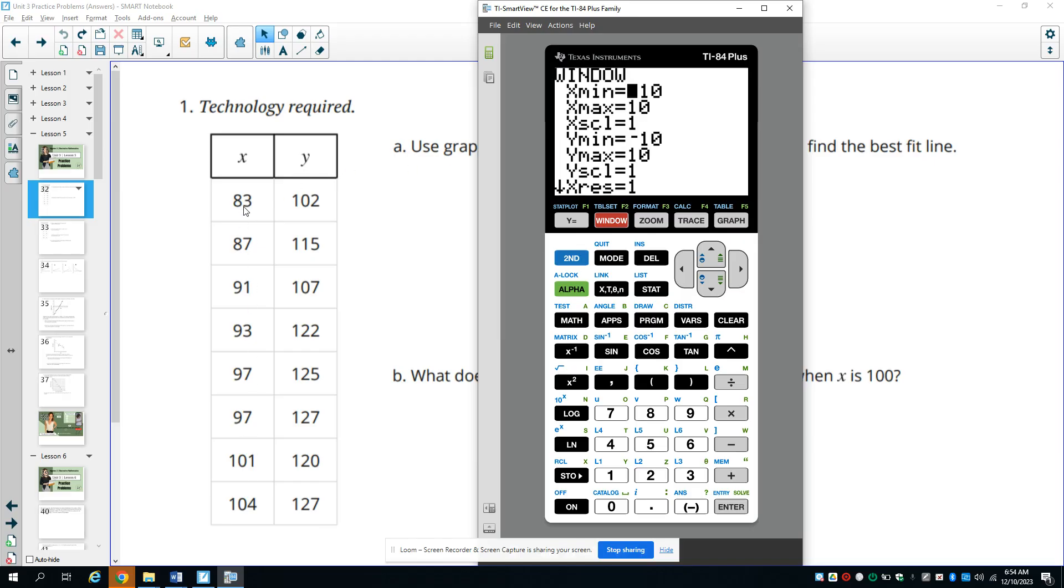This x minimum, our lowest x value is 83. So I'm just going to put this at 75 for my lowest x value. My highest x value is 104. So I'm just going to put my upper boundary at 110. The lowest y value we have is 102. So I'm going to put 90 in as my y minimum. And then the highest y value we have is 127. So I'm just going to put 140 in for my y maximum. So this gives us a window that will show these data points.